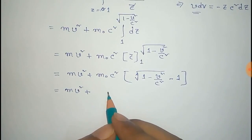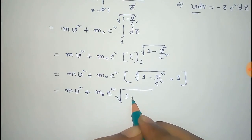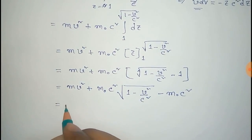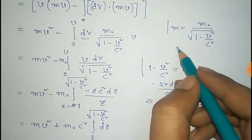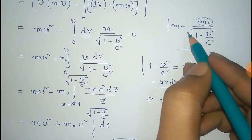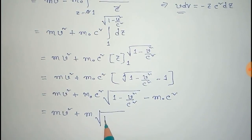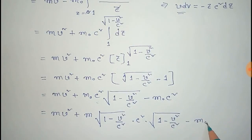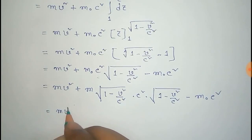So the expression becomes MV squared plus M₀c² times root(1 - v²/c²) minus M₀c². Now, since M = M₀ over root(1 - v²/c²), we can write M₀ times root(1 - v²/c²) as M times (1 - v²/c²). Expanding gives MV squared plus Mc²(1 - v²/c²) minus M₀c².